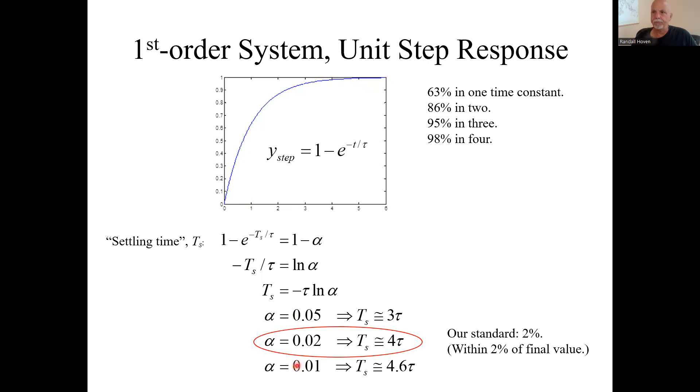Here are some examples: if 5% is your measure, that's about three time constants. If 2% is your measure, it's about four time constants. If 1%, 4.6 time constants. We're going to use 2% as our standard. Not all textbooks are the same, but 2% is also the default in MATLAB. So we'll be using 2%, which means it settles in four time constants.